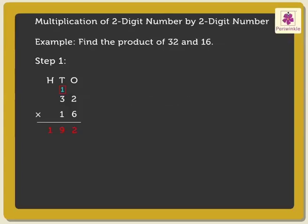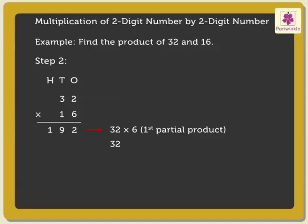We will call 192 as the first partial product. Step 2. Multiply the multiplicand, that is 32, by the 1 in the tens place of the multiplier. As the digit 1 is in the tens place of the multiplier, we are actually multiplying 32 by 10. So we write a zero below the digit 2 of the first partial product. Next, 2 into 1 is equal to 2. After that, multiply the digit in the tens place: 3 into 1 is equal to 3. So we get 320 as the second partial product.